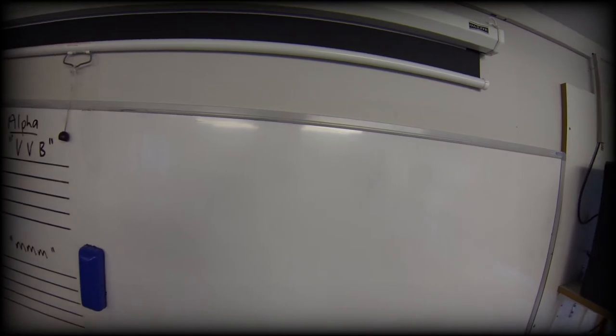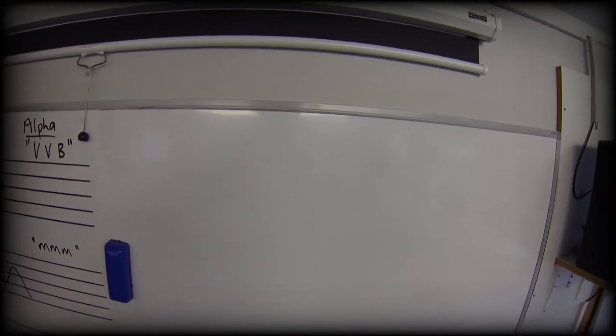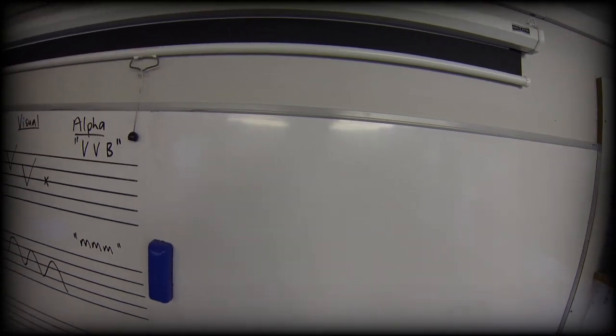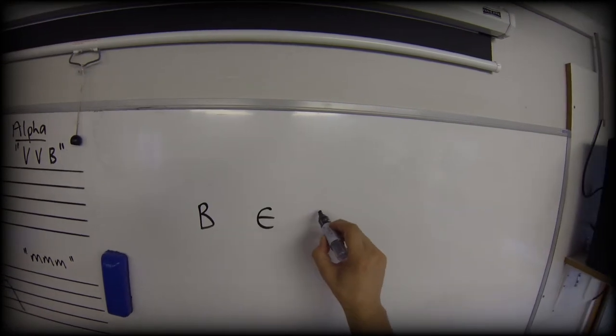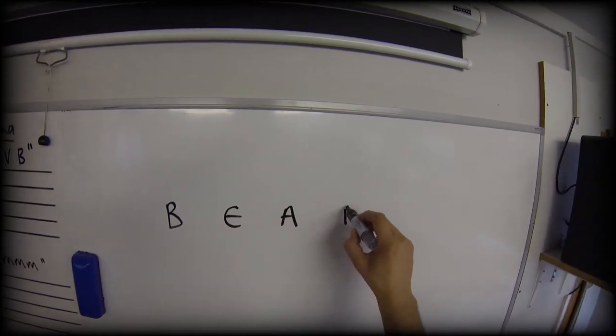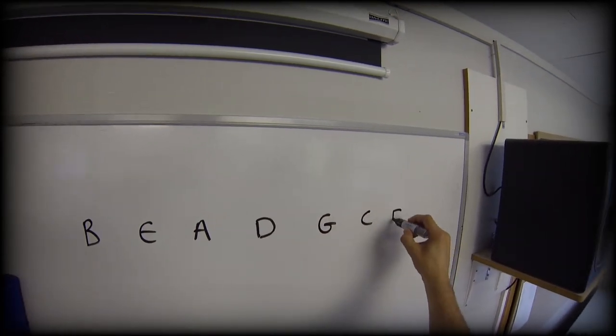So how do we remember? Well first let's just deal with what sharps or flats we use in what order. And a very common way to remember the order in which the flats are written is spelling the word bead and then adding something like gorillas can't fly.